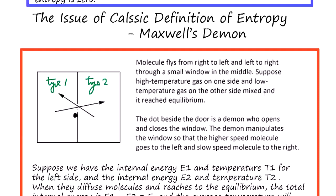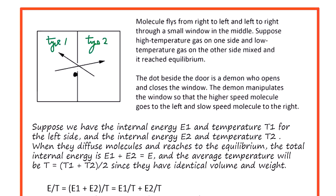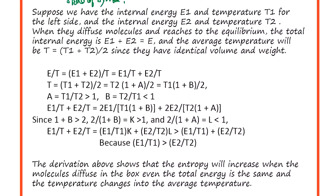When you open, what happens is diffusion happens. Type two gets into type one area, type one gets into type two area. So total energy and temperature stay same, but the state of system changed. This is a state of system change.